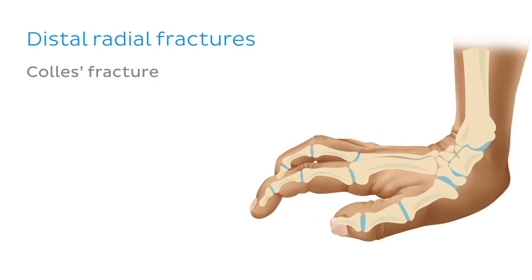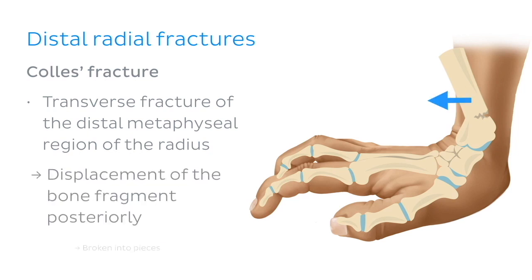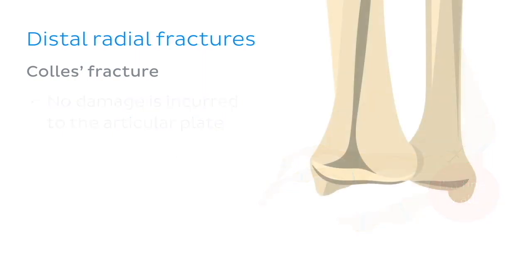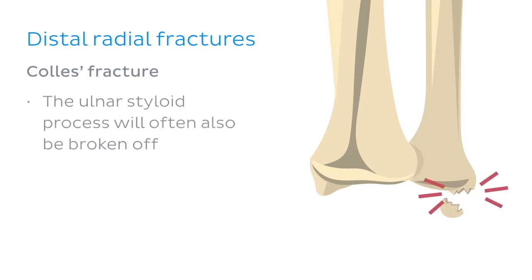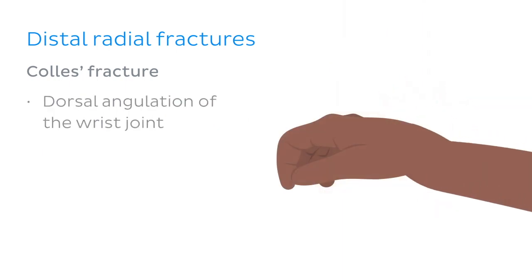One of the most well-known classes of distal radial fracture is Colles fracture. In this situation, a transverse fracture of the distal metaphyseal region of the radius is observed, with displacement of the bone fragment posteriorly and broken into pieces. In the case of a Colles fracture, no damage is incurred to the articular plate of the distal end of the radius. The ulnar styloid process will often also be avulsed, or broken off. A Colles fracture presents with dorsal angulation of the wrist joint, meaning the joint appears displaced in the posterior direction.